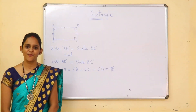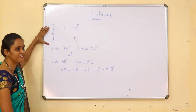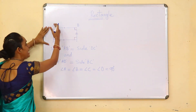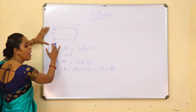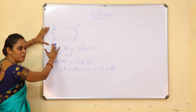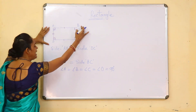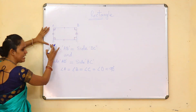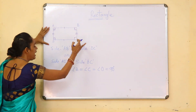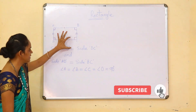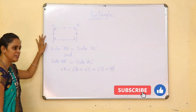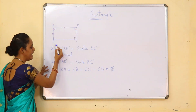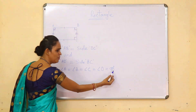Now let's see what is a rectangle. This is a figure of rectangle, where you can see rectangle A, B, C, D. Opposite sides are equal to each other — AD is equal to DC, and AB is equal to BC. And one more thing: all the vertices of a rectangle are equal to 90 degrees. You can see angle A, angle B, angle C, and angle D are equal to 90.